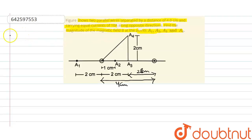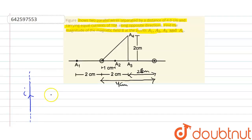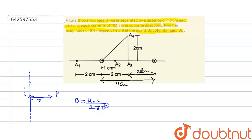Let's calculate the magnetic field at point a1. We know that for a long current-carrying wire, if there is a point P at a perpendicular distance r from the wire, the magnetic field at point P is given by μ₀I divided by 2πr, where r is the perpendicular distance from the wire.